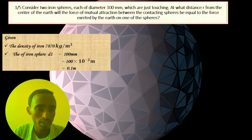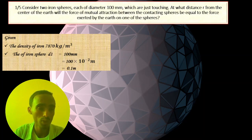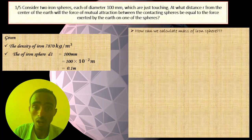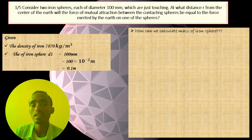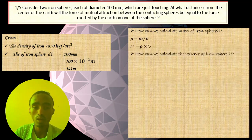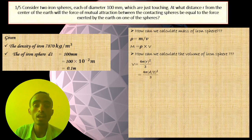The iron sphere diameter is given as 100 millimeters. Converting to meters: 100 times 10 to the power of minus 2 equals 0.1 meters. To calculate the mass of the iron sphere, we use the fact that density equals mass over volume, so mass equals density times volume. The volume of the iron sphere is calculated using the formula four-thirds pi r cubed.